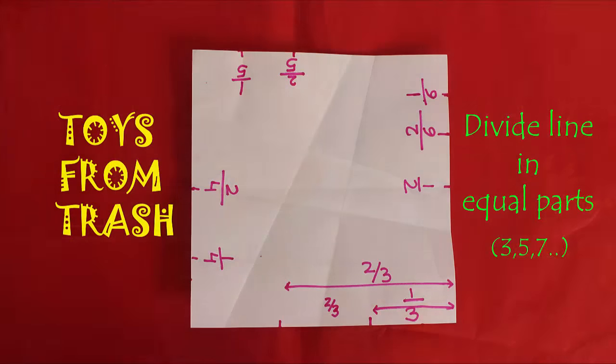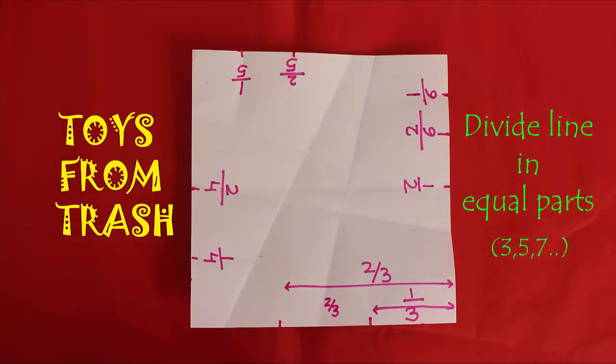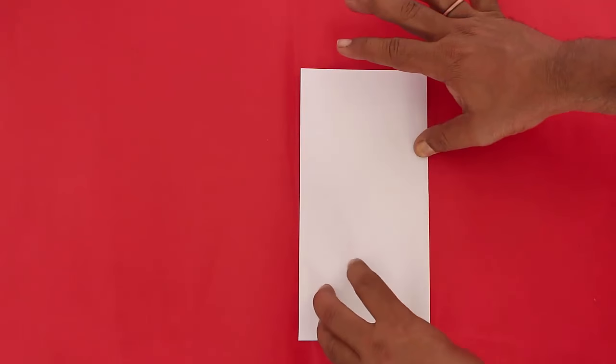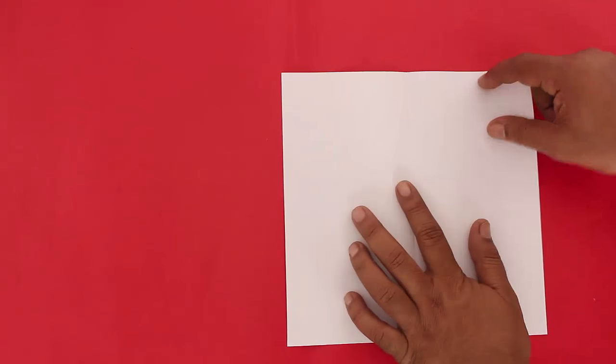For this we will just take the square paper and first divide this in half along one of the sides. This is the half point. And now if we take any other corner and put it on this half point...